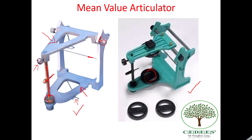We also have removable pins, which are generally used while demounting the articulator. Although the condylar slot is spring-loaded, it is generally of no use since they are not adjustable. We also have a triangular arrangement — similar to what can be seen in this picture — which is only used for support and has no other value.